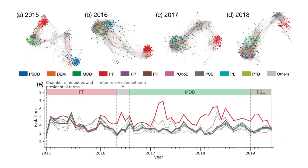We also introduced other network-based metrics such as fragmentation and isolation of parties. Isolation is the average shortest path length between the deputies of a party to all other parties. We looked at this measurement just before and after the most recent impeachment process and found some interesting signals. The isolation of the Workers' Party, who were the government at that time, increased considerably just after the beginning of the impeachment process, and it lasted for quite a long time, even after the end of the impeachment. Only recently have they become a little bit less isolated.